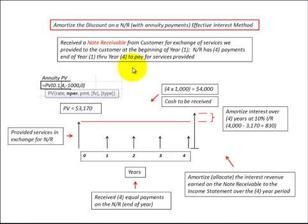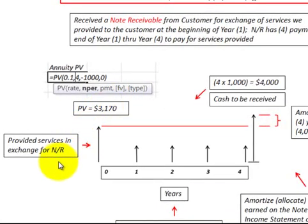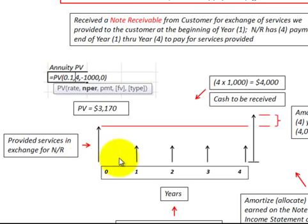What I'm going to demonstrate here is how to amortize the discount on a note receivable with annuity payments using the effective interest method. We provided services at the beginning of year one, and in exchange for those services we received a note receivable that includes four equal payments at the end of each of the next four years.